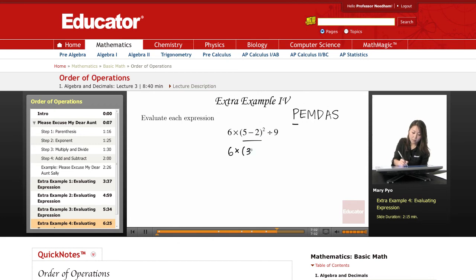So that's 3 squared divided by 9. Now here, what's my next operation? Exponents.